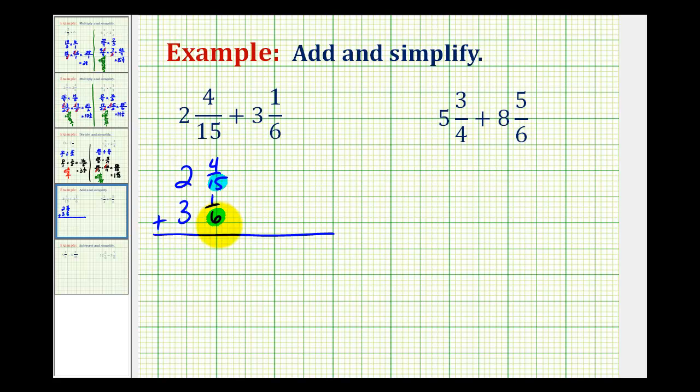So the least common denominator is going to be the least common multiple of fifteen and six, which is the smallest number that is divisible by fifteen and six. And that would be thirty. So we want to write both of these fractions with a denominator of thirty.